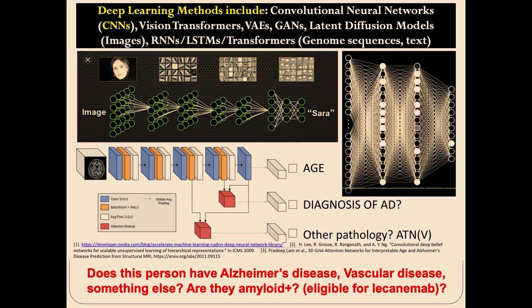Deep learning methods for imaging were initially developed in computer vision. They include convolutional neural networks, vision transformers, variational autoencoders, generative adversarial networks, and latent diffusion models. There's also a different type — recurrent neural networks such as LSTMs or transformers that work with sequences of text, like words, or sequences of the genome. But the way to train them, at least for imaging, is pretty general.